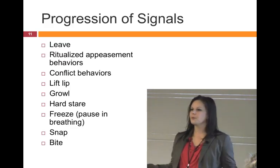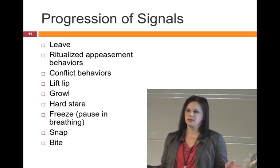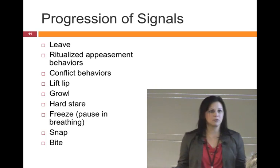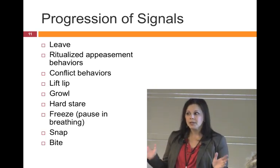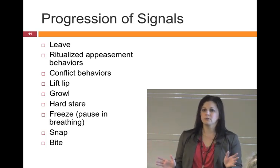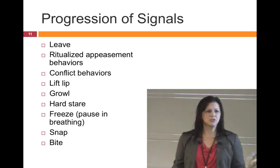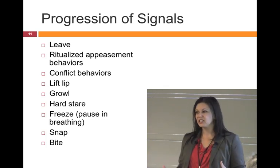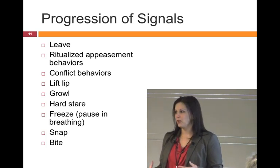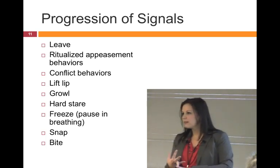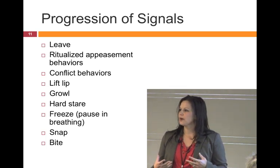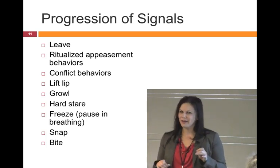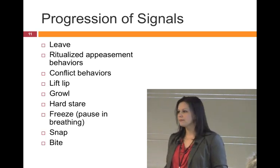We can see a progression of signals throughout communication. The first and easiest choice is just to leave — walk away. But sometimes they can't or choose not to. Then we start to see ritualized appeasement behaviors: 'I'm here, but please don't hurt me.' If that doesn't diffuse the situation, we get conflict behaviors — signals saying this is really uncomfortable and could escalate. Then come clearer warning signs we really don't want to push: the lip lift, the growl, the hard stare with whites of the eyes showing, the freeze. That freeze — when they go suddenly still — is when the hair on the back of your neck goes up. Don't ignore that. Then the snap, then the bite — those are the things we want to avoid.